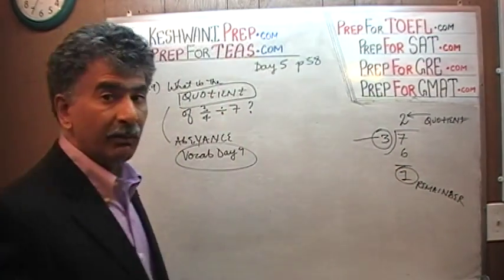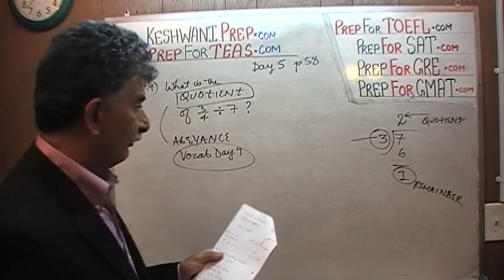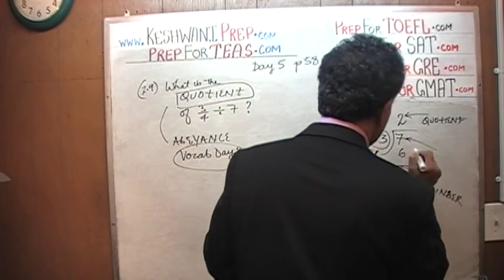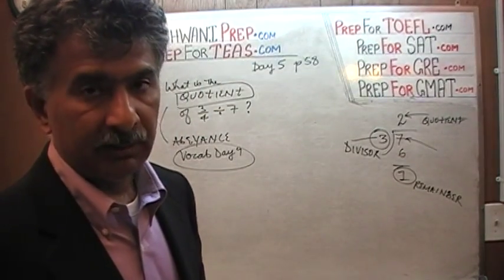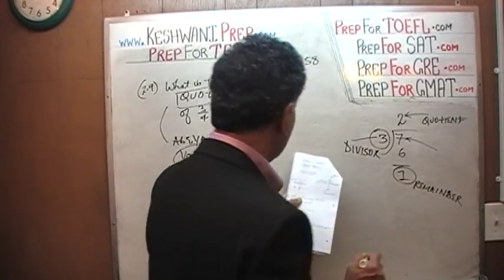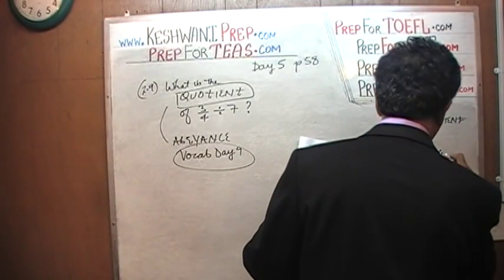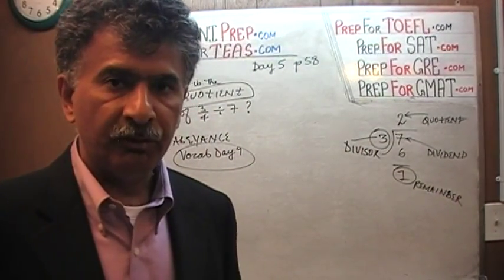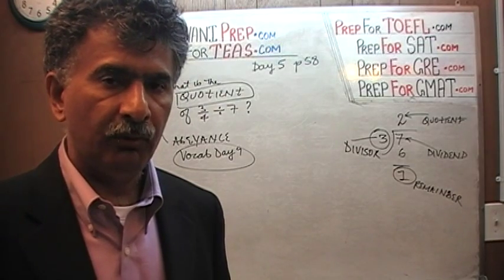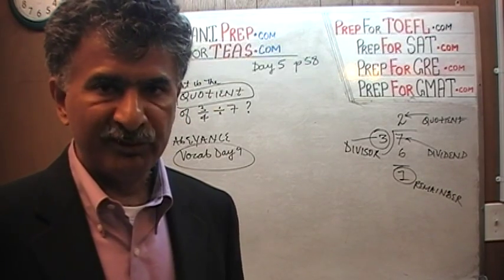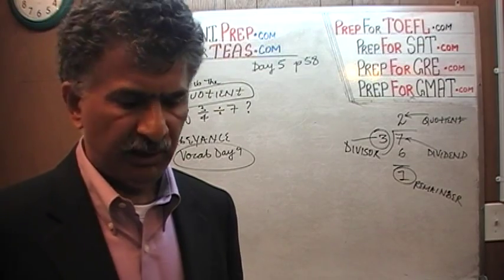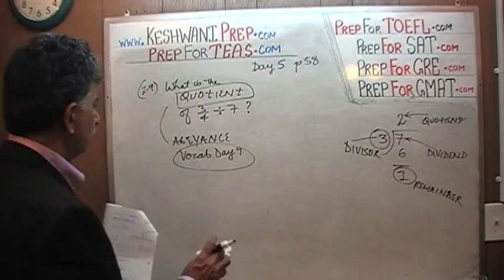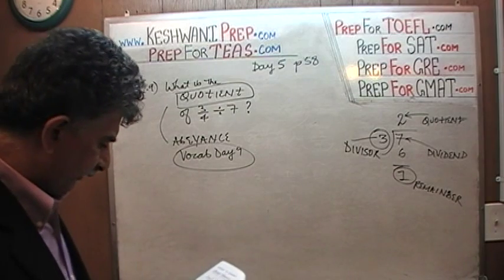Three is the number that we are dividing by — 3 is called the divisor. And finally, the number that is being divided — here, 7 is the number being divided — is called the dividend. Make sure you take good notes and know this terminology so that you don't have to pause in the middle of the exam. It wastes time and makes you nervous, and the last thing you want is more anxiety during the exam.